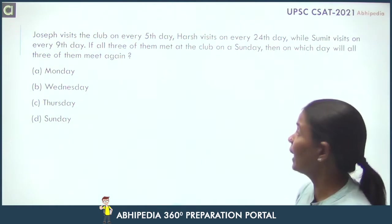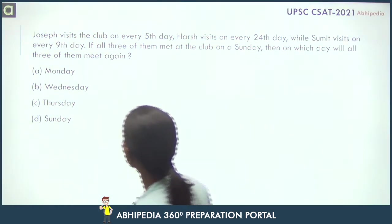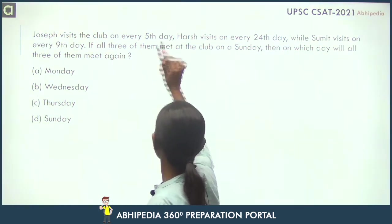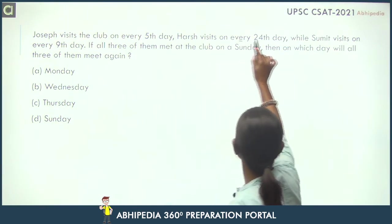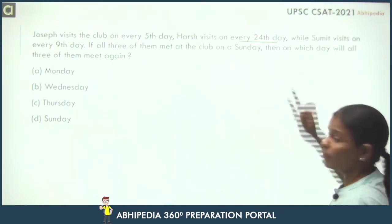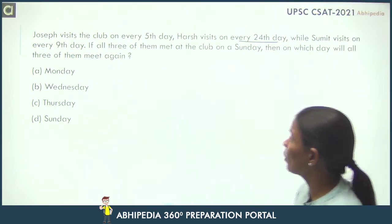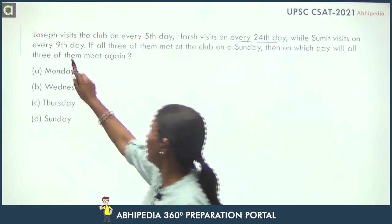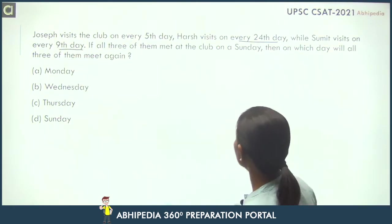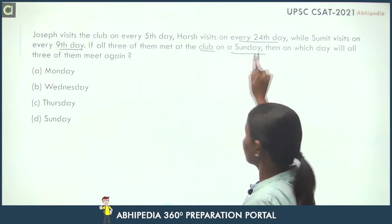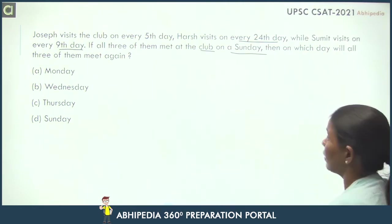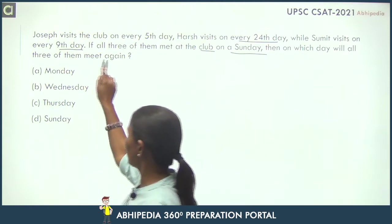What is the question here? Joseph visits a club every 5th day, Harsh visits every 24th day, and Sumit visits on every 9th day. If all three met in the club on Sunday, then on which day will all three meet again?